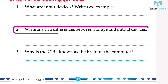Question 2: write any two differences between storage and output devices. Answer — Storage: storage devices are the hardware devices which allow storing data and applications; hard disk, DVD and pen drive are the most important storage devices. Output: the devices which are used to display, print and show the results after processing are called output devices; monitor, printer and speakers are the most important output devices.